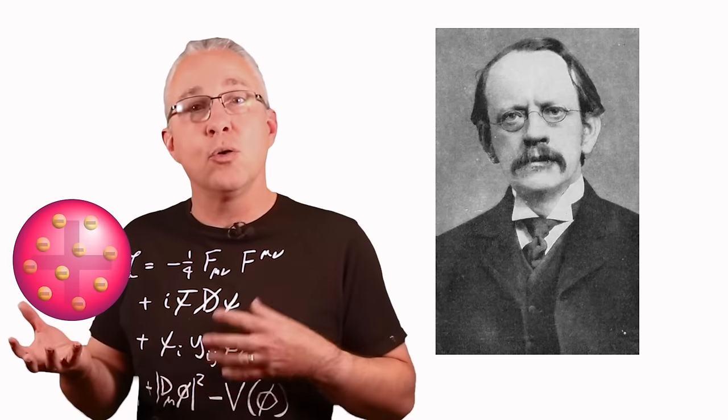As a result, J.J. Thompson developed a model of the atom that was a bit like a cake with raisins embedded in it, or often referred to as the plum pudding model, with a positive dome with electrons embedded in it.